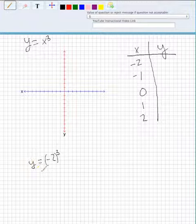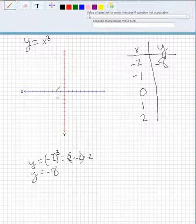What does y equal when we cube negative 2? It's negative 2 times negative 2 times negative 2. That's 4 times negative 2, which is negative 8. So if we go to negative 2, then negative 8, here's our first point.